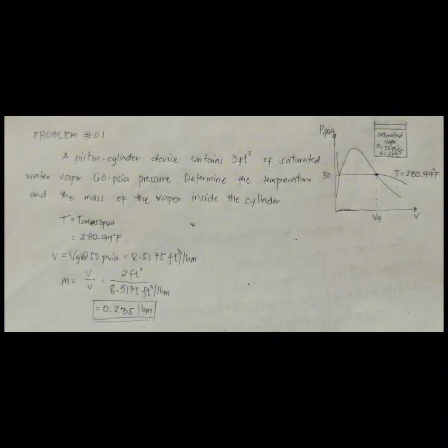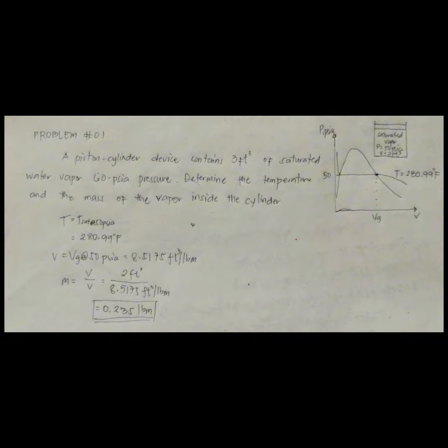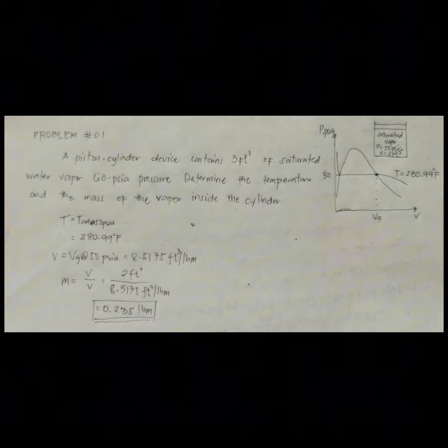From table A-5E, the specific volume of this saturated vapor at 50 psi is v equals vg at 50 psi, which equals 8.5175 cubic feet per pound mass. This is also from table A-5E.